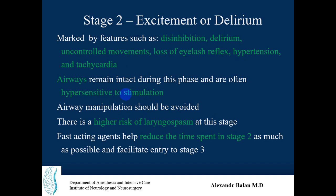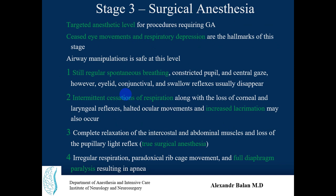Stage three is surgical anesthesia — the targeted anesthetic level for procedures requiring general anesthesia. Cessation of eye movements and respiratory depression are hallmarks of this stage. Airway manipulations such as endotracheal tube placement are safe here. The patient shows regular spontaneous breathing, constricted pupils, and central gaze; however, eyelid, conjunctival, and swallow reflexes usually disappear, requiring care to prevent aspiration. Intermittent cessation of respiration along with loss of corneal and laryngeal reflexes can also occur.